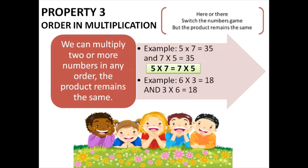Another example: six times three is eighteen and three times six is also eighteen. That means six times three is the same as three times six. Here or there, switch the numbers game, but the product remains the same.